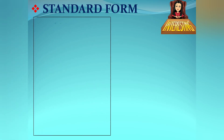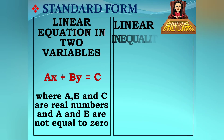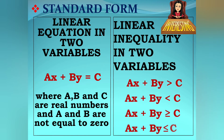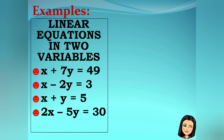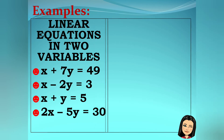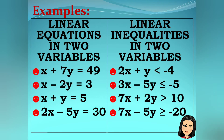In terms of standard form: a linear equation in two variables has the form ax plus by equals c. A linear inequality in two variables has the forms ax plus by is greater than c, ax plus by is less than c, ax plus by is greater than or equal to c, or ax plus by is less than or equal to c — where a, b, and c are real numbers and a and b are not equal to 0. Examples of linear equations: x plus 7y equals 49, x minus 2y equals 3, x plus y equals 5, and 2x minus 5y equals 3. Examples of linear inequalities: 2x plus y is less than negative 4, 3x minus 5y is less than or equal to negative 5, and 7x plus 2y is greater than or equal to negative 20.